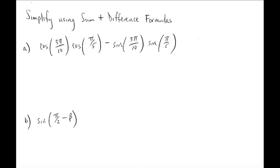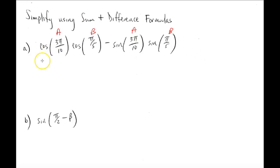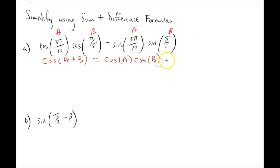We want to get started on this first example. We have cosine of 3π/10 times cosine of π/5 minus sine of 3π/10 times sine of π/5. The first thing we notice is that this angle and that angle are the same, and so this follows the profile of cosine(A+B), where cosine(A+B) equals cosine(A)cosine(B) minus sine(A)sine(B).